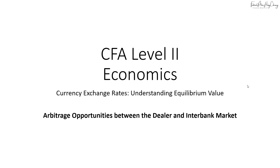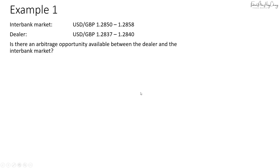What if you are asked to determine whether there are any arbitrage opportunities between the dealer and the interbank market? The interbank market quotes this currency pair, dollar to pound, from 1.2850 to 1.2858, and for the dealer they are quoting 1.2837 to 1.2840. So in this case, is there an arbitrage opportunity available between the dealer and the interbank market?